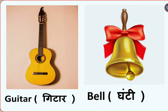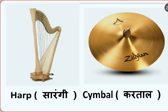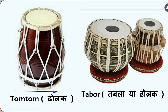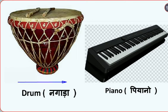Musical Instruments. Guitar means Guitar. Well means Ghanti. Harp means Sarangi. Symbol means Kartal. Tambourine means Duffly. Drum means Dol. Tom-Tom means Dholak. Tabor means Tablaaya. Drum means Nagara.